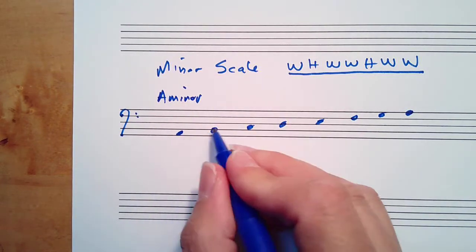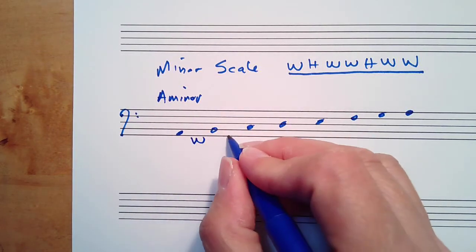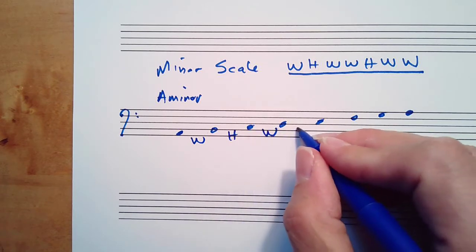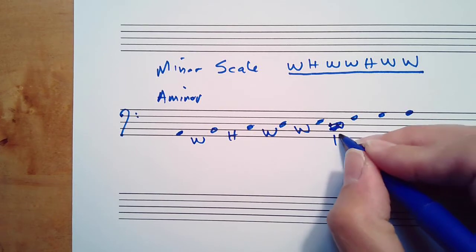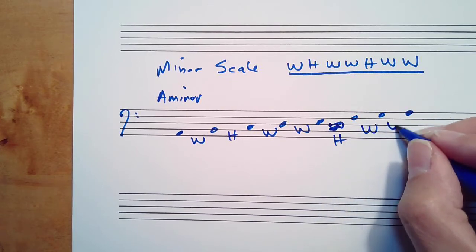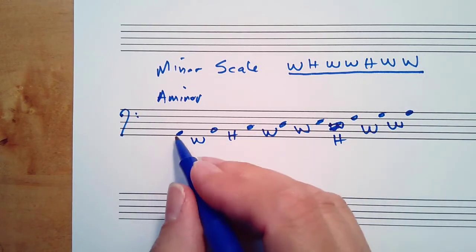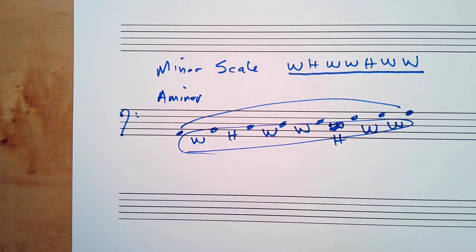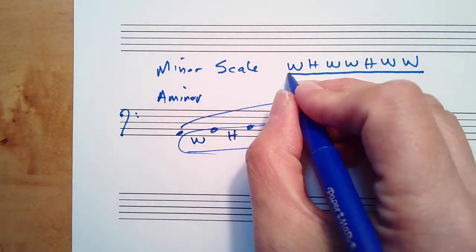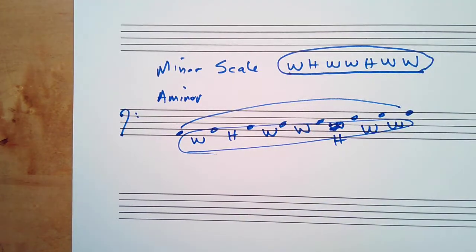And then you can analyze this and this gives you whole step, half step, whole, whole, half, whole, whole. So we can use from A to A to generate this. Really you just need to memorize it.